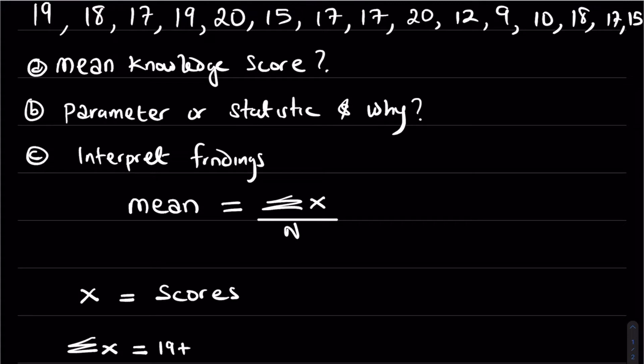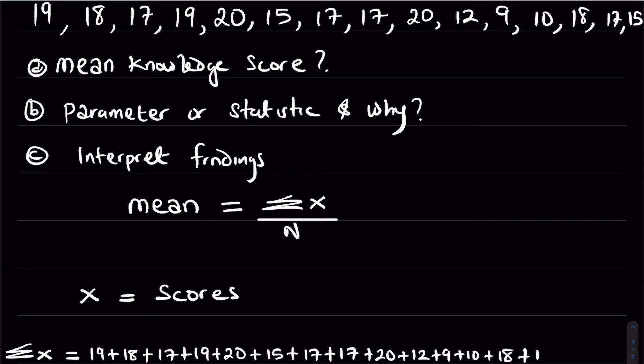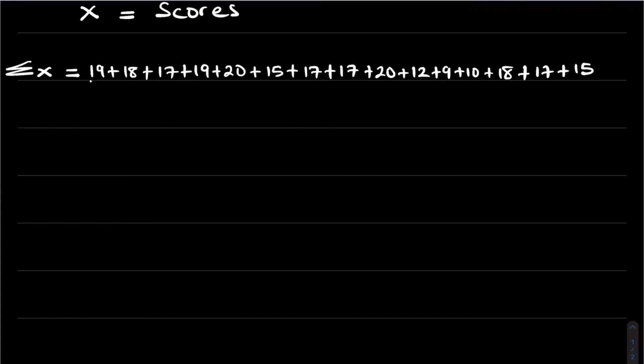So we simply say 19 plus 18 plus 17 plus 19 plus 20 plus 15 plus 17 plus 17 plus 20 plus 12 plus 9 plus 10 plus 18 plus 17 plus 15, all divided by 15.